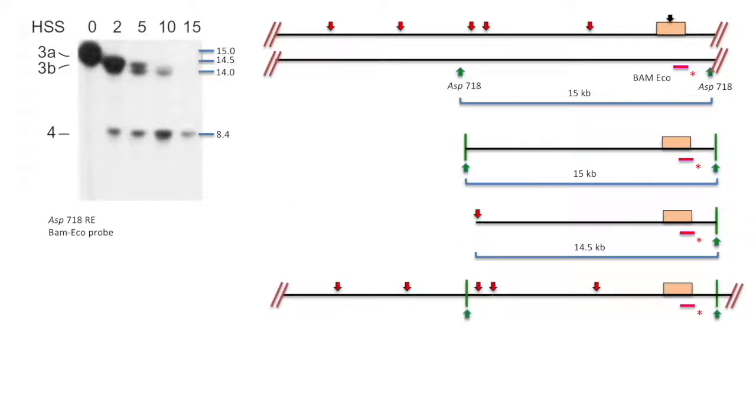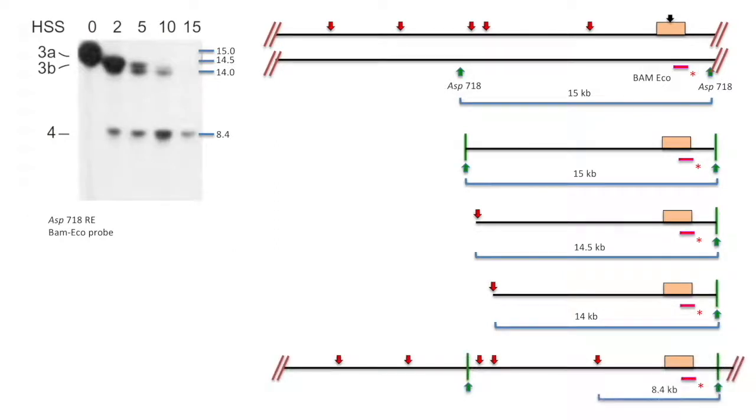The next biggest band is 14 kb, and its hypersensitive site is 14 kb away from the restriction site. The last one is 8.4 kb, and it is 8.4 kb away from the restriction site. In total, they found three hypersensitive sites labeled as 3a, 3b, and 4 from this experiment.